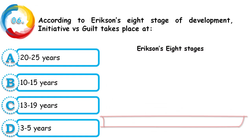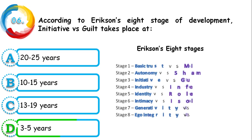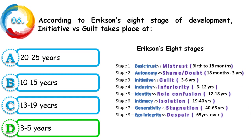Question 6: According to Erikson's eight stages of development, 'initiative versus guilt' takes place at — 20–25 years, 10–15 years, 13–19 years, or 3–5 years? The correct answer is 3–5 years. At this stage, the child initiates various activities by themselves and feels guilt for their mistakes. The remaining stages, also known as psychosocial development theory, are also important to recall.